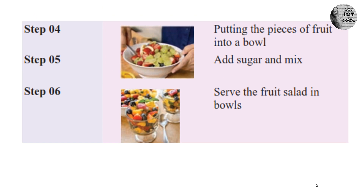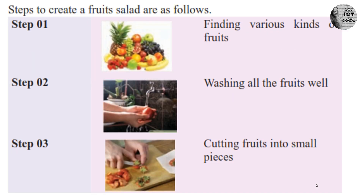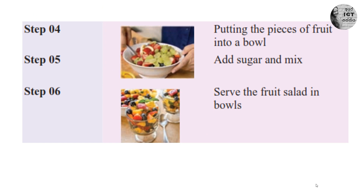Then put the pieces of fruit into a bowl, then add sugar and mix. Finally, we can serve the fruit salad. Our problem was how to prepare a fruit salad. The inputs are various kinds of fruits, salt, and sugar. The process is washing, cutting, mixing. The output is serving the fruit salad.